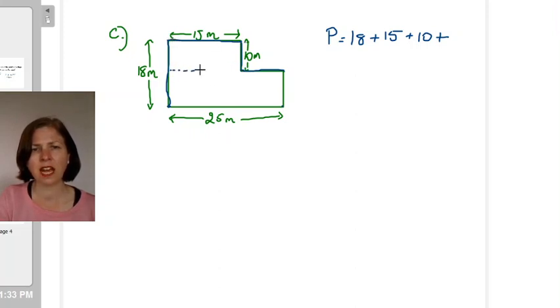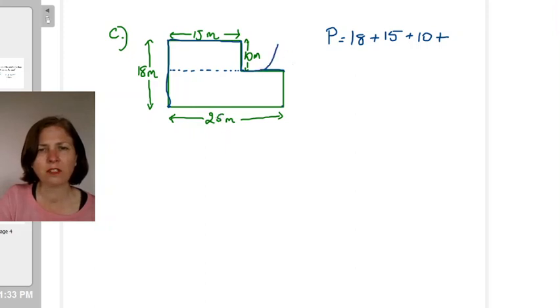Well I can see that this length here is 25 and if I put the length that's missing and this 15 lined up next to each other, this 15 is the same as this dotted line here. So they add up to 25. So this missing side must be 25 minus 15.